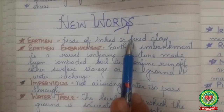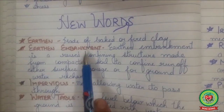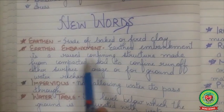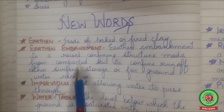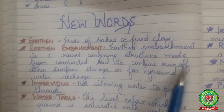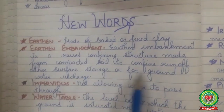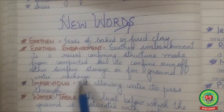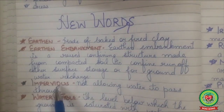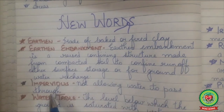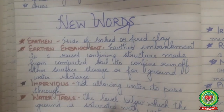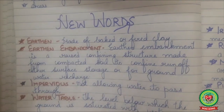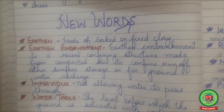Earthen: made of baked or fired clay. Earthen embankment: a raised confining structure made from compacted soil to confine runoff, either for surface storage or for groundwater recharge. Impervious: not allowing water to pass through. Water table: the level below which the ground is saturated with water.